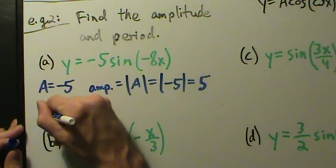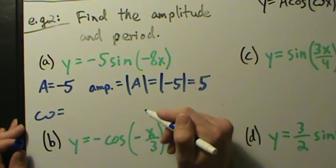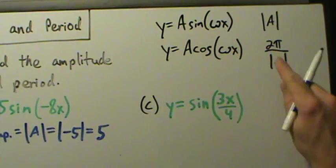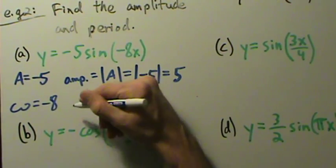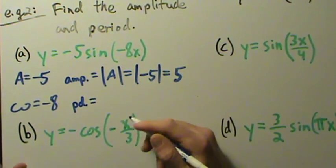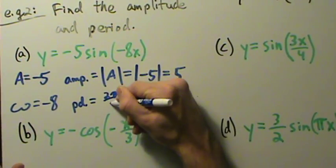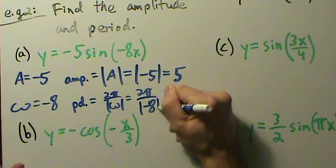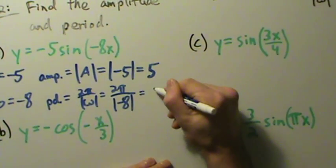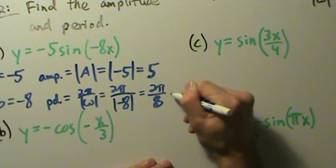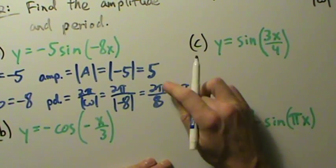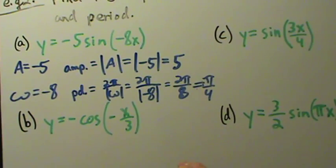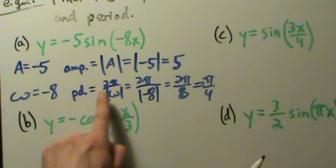Omega is negative 8. The period is 2π over the absolute value of omega, so that's 2π over the absolute value of negative 8. The absolute value of negative 8 is positive 8, so this is 2π over 8, which reduces to π over 4. So for part A, the amplitude is 5 and the period is π/4.